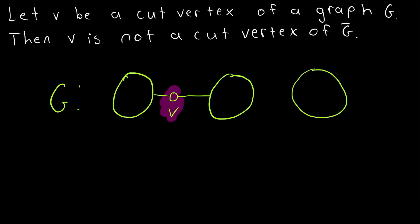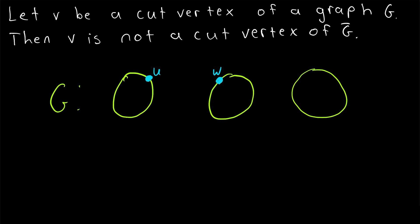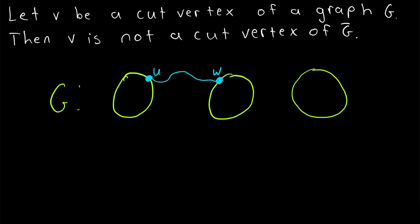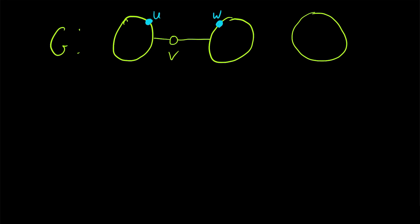Now remember, in order for vertex V to be a cut vertex of a graph, there must be two other vertices — say U and W — such that every path connecting U and W contains that cut vertex V. Then deleting the vertex V disconnects those vertices, thus disconnecting the component that V belongs to.